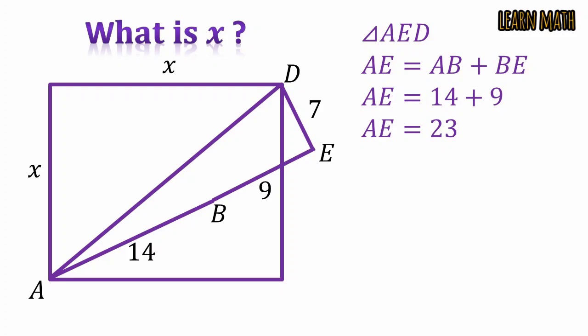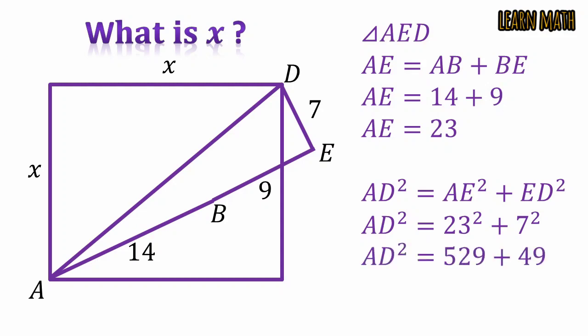Now using Pythagorean theorem we can write AD square is equal to AE square plus ED square. Putting the values we will get this. Taking squares, 23 square is equal to 529 and 7 square is equal to 49. Add this and we will get 578, so AD square is equal to 578.